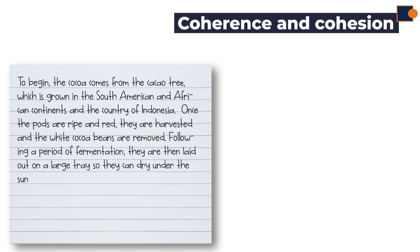In terms of coherence and cohesion, the entire paragraph has logical progression, starting with an explanation of the growing stage until all natural processes end, which is drying in the sun. This is coherent because the next paragraph will focus on the man-made part of chocolate production.